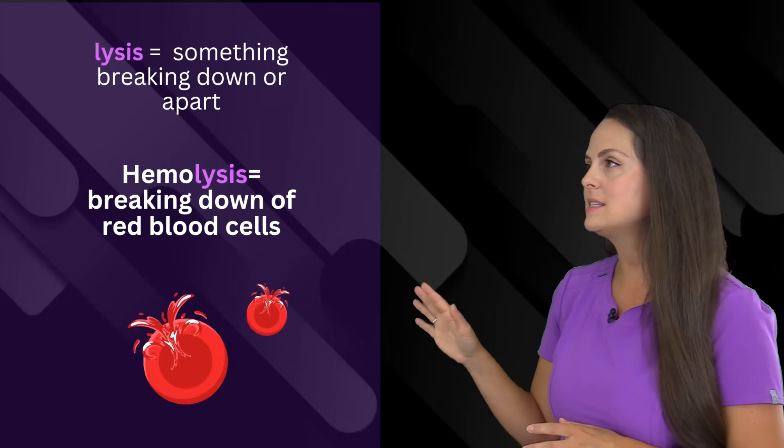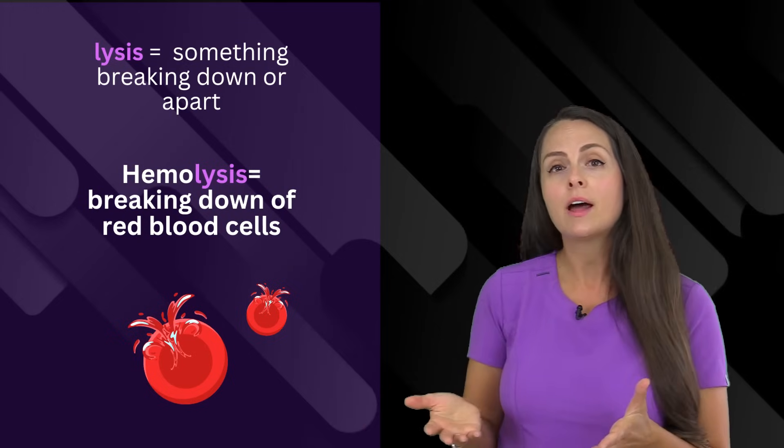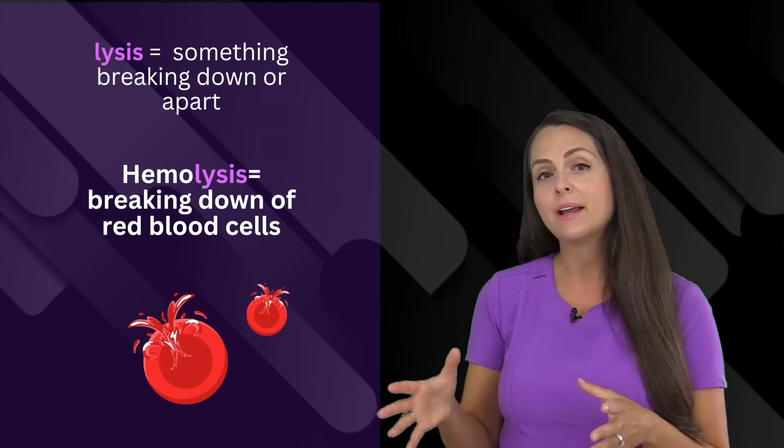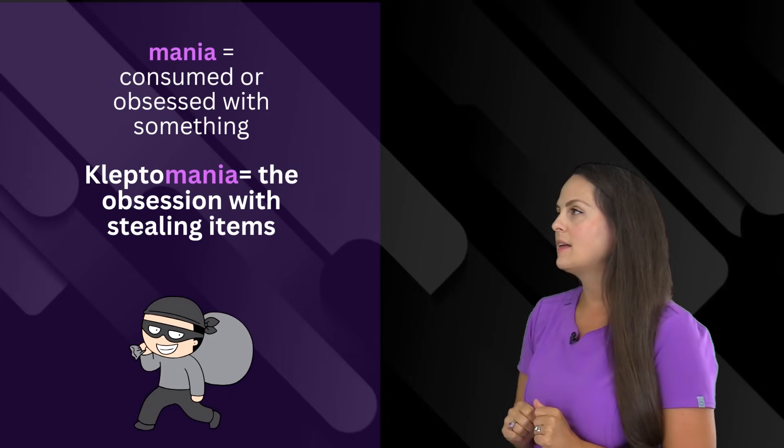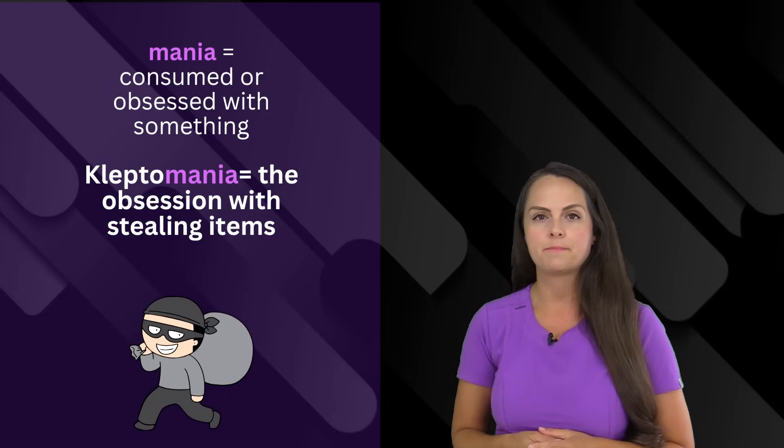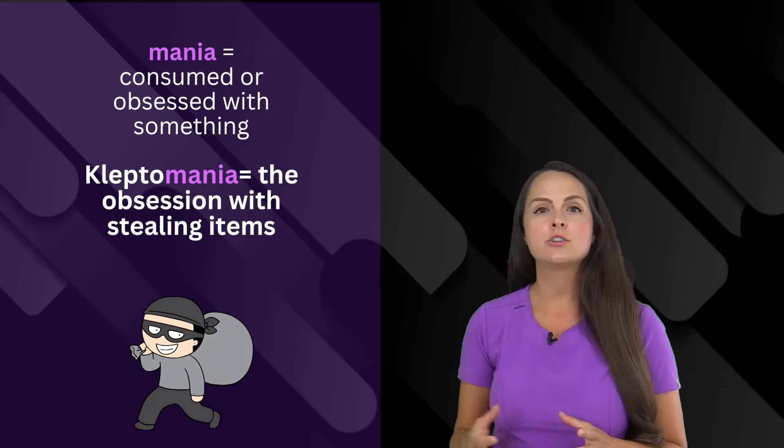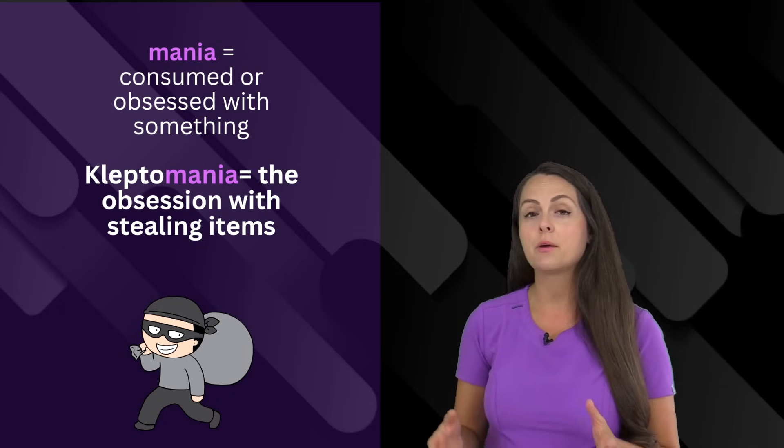Next is lysis. This means to break apart or down. The term hemolysis means that we have the breakdown of the red blood cells. Then there's a suffix mania. This refers to being consumed or obsessed with something. If someone has an obsession with stealing something, we would say that they are experiencing kleptomania.